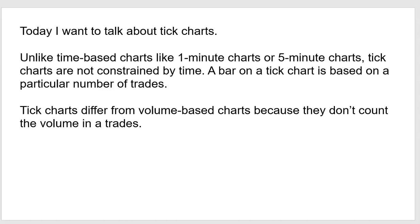Unlike time-based charts like one-minute or five-minute charts, tick charts are not constrained by time. A bar on a tick chart is based on a particular number of trades that take place in that bar. For example, if you have a 100-tick chart, there has to be 100 trades regardless of the volume. That's why they differ from volume-based charts — they don't count volume. A volume-based chart set at 1,000 requires 1,000 contracts traded per bar, whereas a 1,000-tick chart requires 1,000 trades and the trade size can vary.